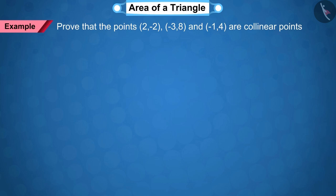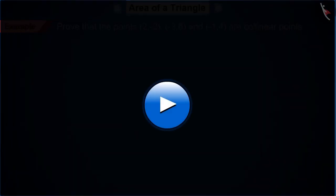Prove that the points (2, -2), (-3, 8) and (-1, 4) are collinear points. To solve the question, pause the video and then match your answer.